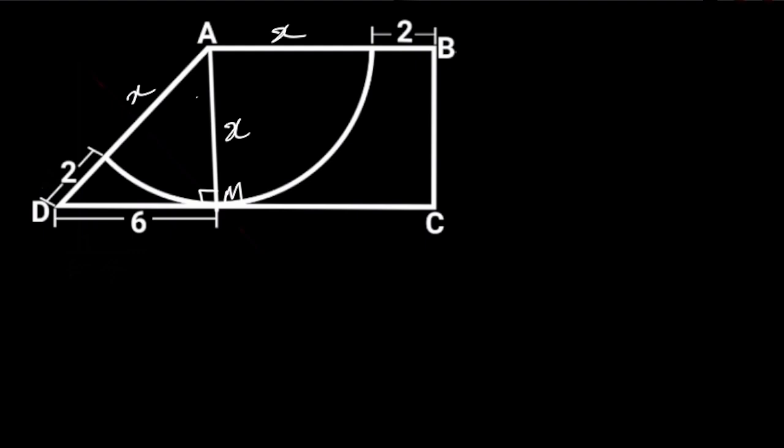Next let's focus on triangle AMD. Triangle AMD is a right triangle, so from Pythagoras theorem, AD squared is equal to AM squared plus DM squared. Also, from triangle AMD, AD is equal to 2 plus X, AM is equal to X, and DM is equal to 6.